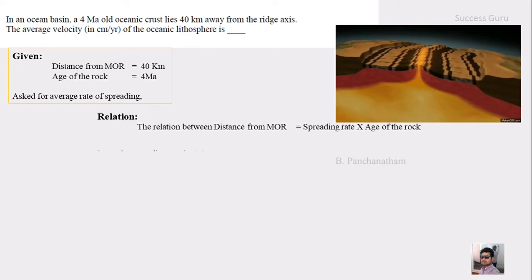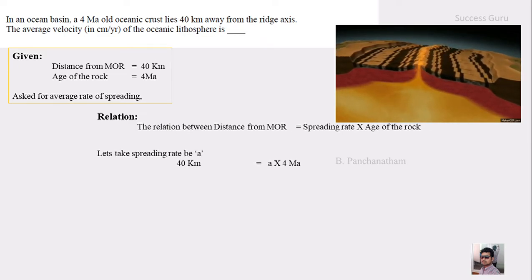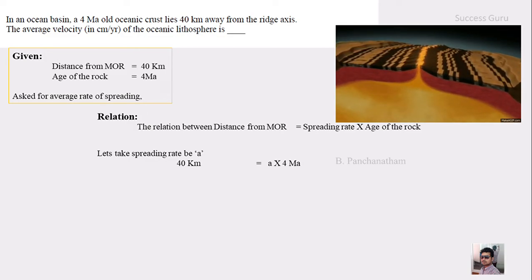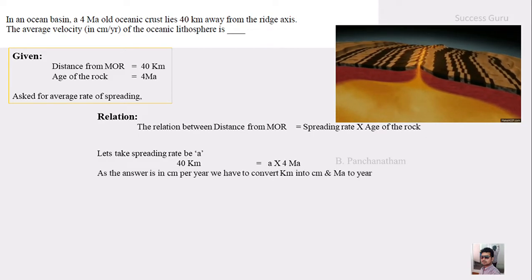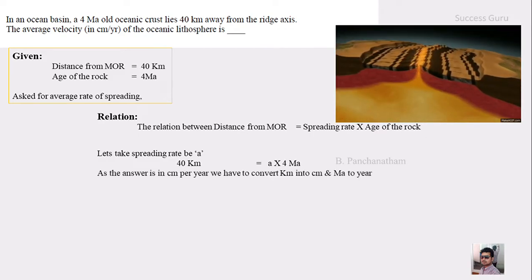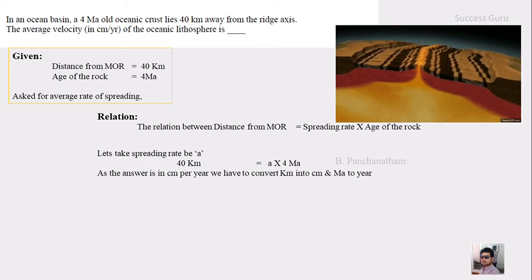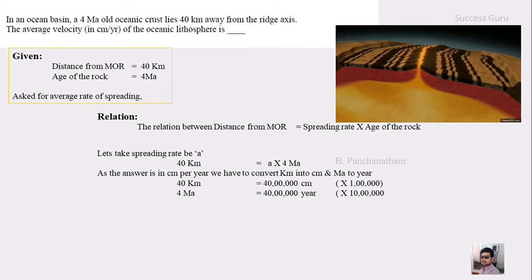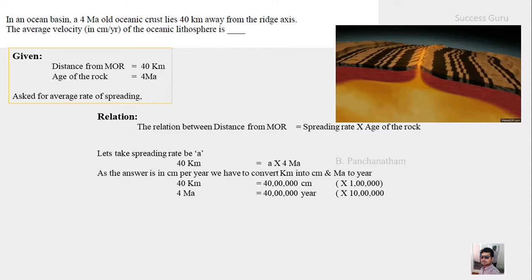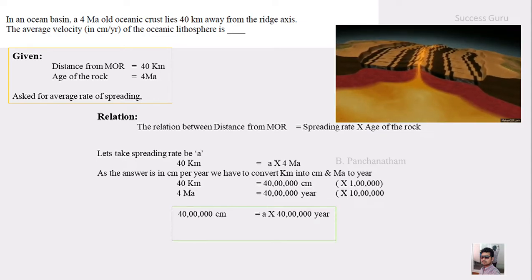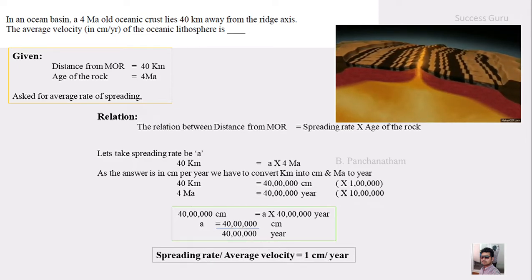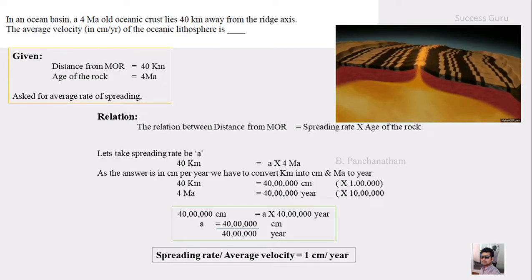But we don't know the spreading rate. So we will keep it as A. Then the equation will be 40 km is equal to A times 4 million annum. But in the question they asked, the results would be in centimeter per year, right? So we have to convert the kilometer into centimeter and million annum into years. So the 40 km will become 40 lakhs centimeters and 4 million annum will become 40 lakhs years. So by substituting and cross multiplying, what we get is the spreading rate that is 1 centimeter per year. So the average velocity of the lithosphere is 1 centimeter per year.